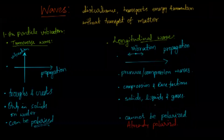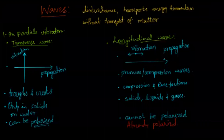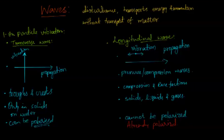Longitudinal waves are a type of wave in which the particle in the medium vibrates along the direction of motion, or along the propagation direction. Assuming the wave moves along the positive x direction, the particles in the medium also vibrate along x — both positive x and negative x. The best example for this is the sound wave.